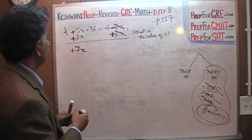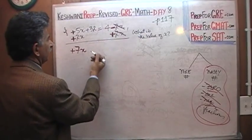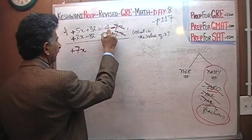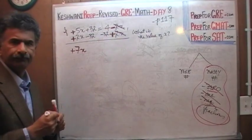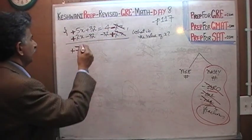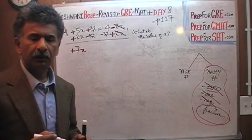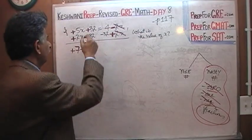And now we have to bring this number on the other side. Let's subtract 32 from both sides of the equation. So here we have positive 32 and here we have negative 32. Positive 32 and negative 32 will cancel out.